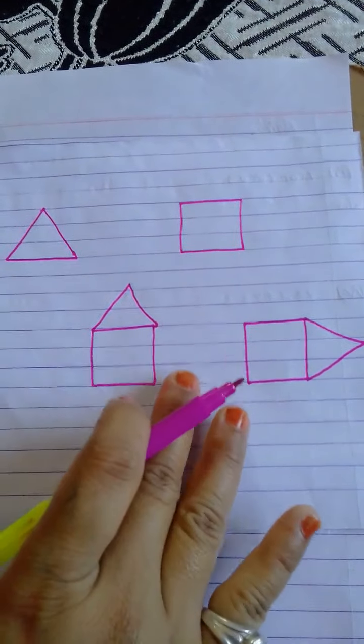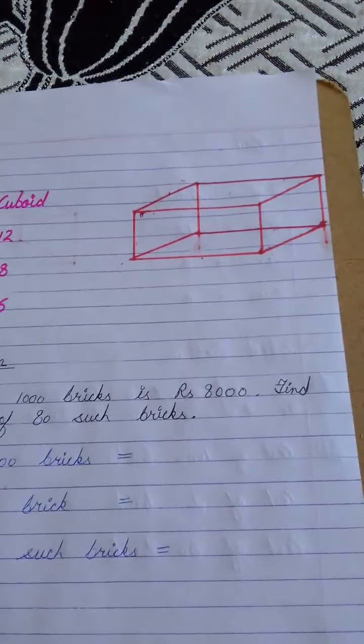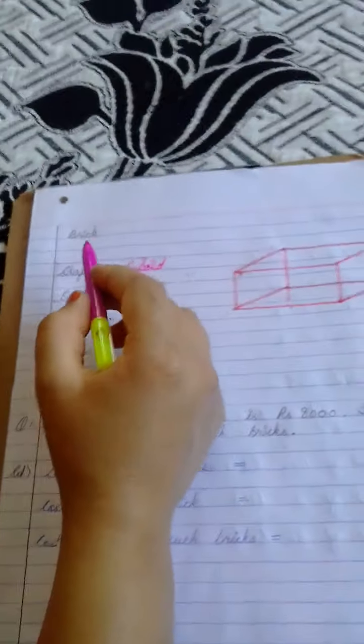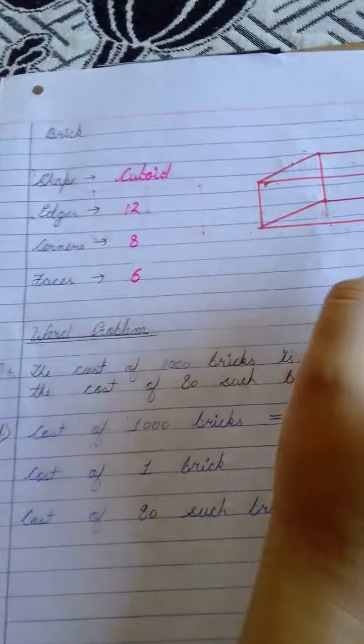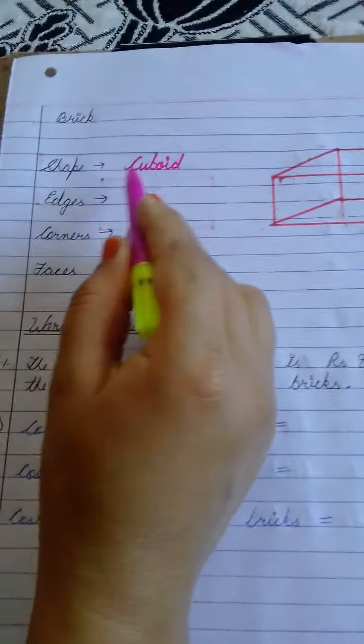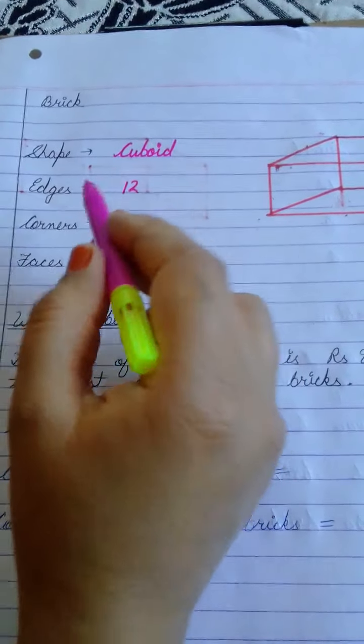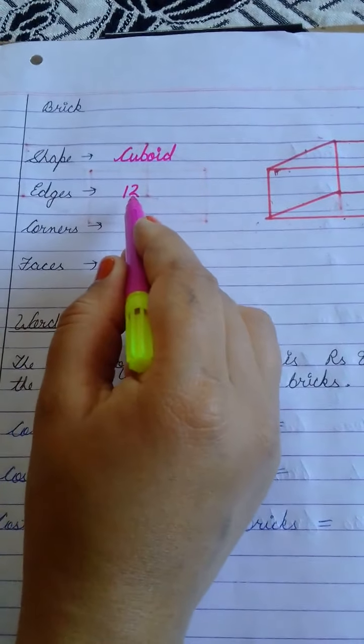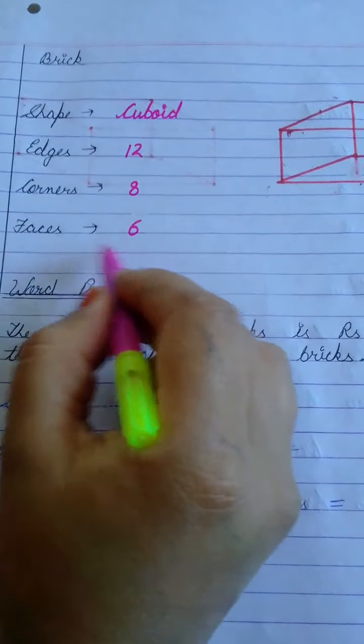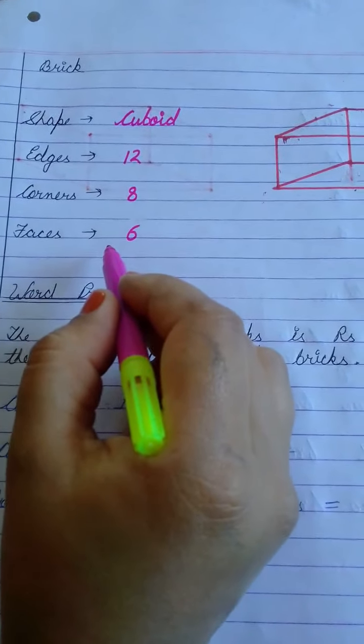Now since this chapter is especially about brick, so let us know some properties of brick. First is, see all of you have seen a brick children. What is the shape of a brick? It is cuboid in shape. How many edges does it have? It has 12 edges, 8 corners and 6 faces.